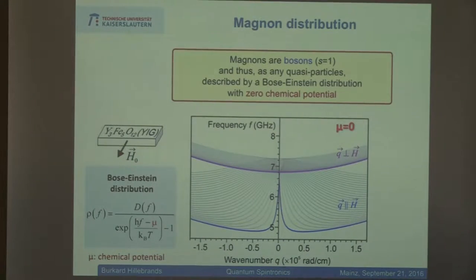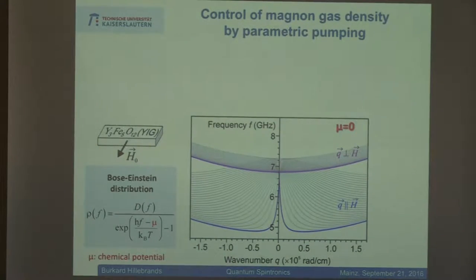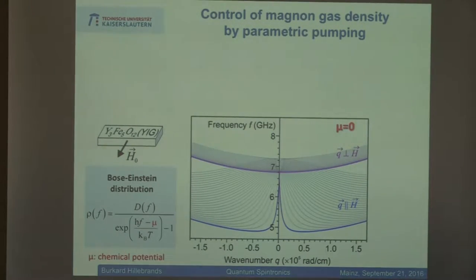We have this situation, and now what we would like to do is have Bose-Einstein condensation — collecting all the magnons at the lowest point in energy. The minimum is at finite wave vectors. How can we bring all the magnons down there? What we can do is switch this open system, where all the magnons are thermally excited, into a closed system by bringing it out of equilibrium into a flow equilibrium far away from thermal equilibrium. We do this simply by injecting magnons into the system.